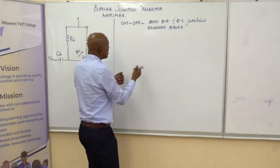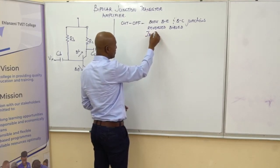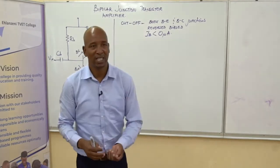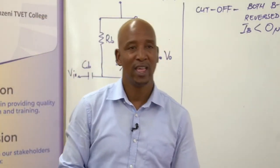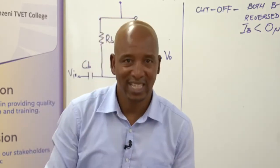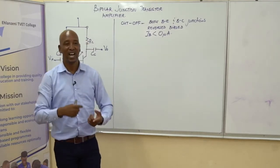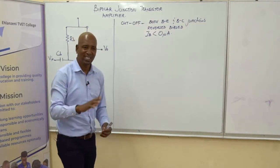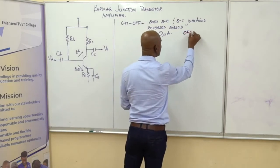If we don't have current in the base, there will be no current flowing in the collector and no current in the emitter. The base is the controlled electrode of the transistor — if you increase IB, the collector current will also increase. So if IB is below zero microamps, the transistor in the cutoff region is said to be off. It's in an off state.